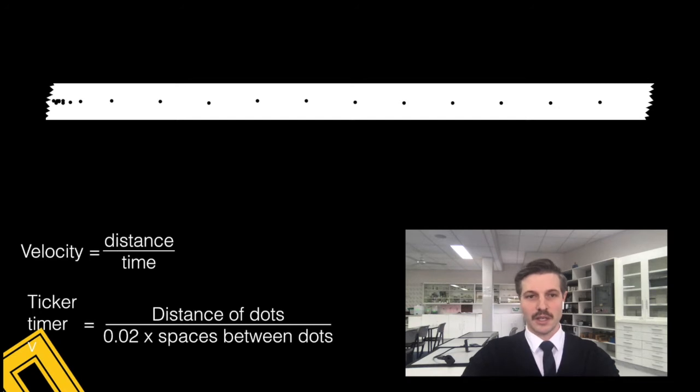And then we have the interval of each dot, which is 1/50th of a second, which is 0.02, times how many spaces there are between dots.